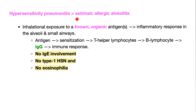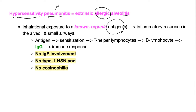Hypersensitivity pneumonitis is also known as extrinsic allergic alveolitis. Pneumonitis is the singular form. The name 'hypersensitivity' tells you it's related to allergies — yes, indeed — and it's called 'allergic.' Alveolitis: '-itis' means inflammation, and likewise 'pneumonitis' refers to inflammation of lung tissue.